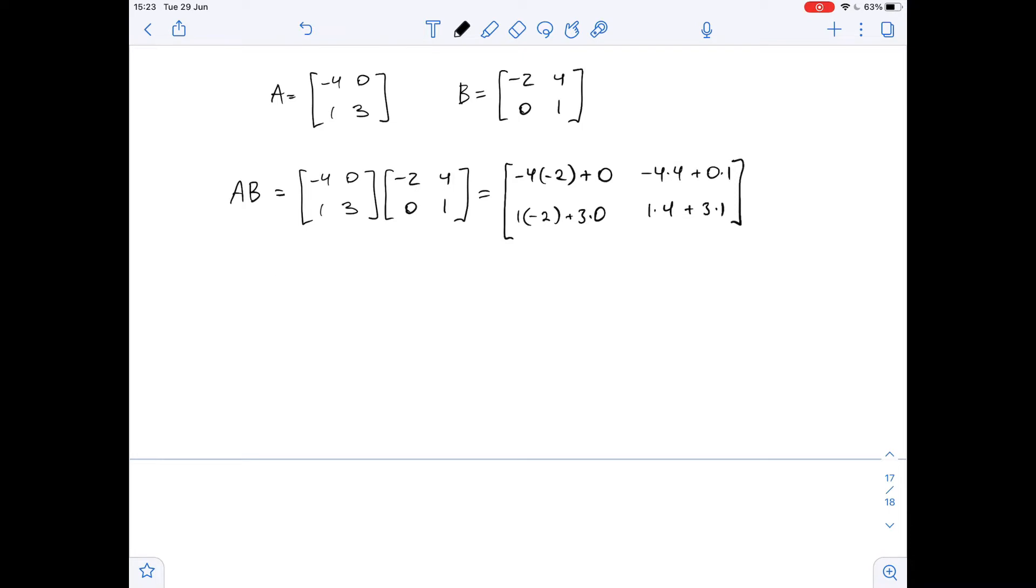Let's do the calculations. We'll get 8, negative 16, negative 2, and 4 plus 3 is 7. So, this is our product AB. Let's find BA.